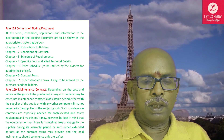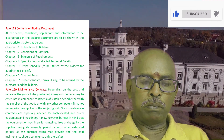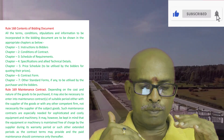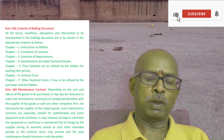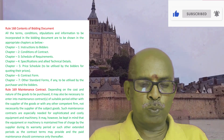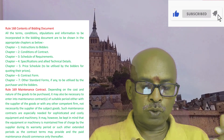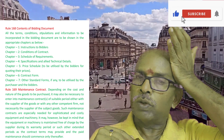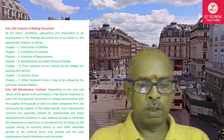Now we have come to the preparation of the bidding document — what should be the contents. The government has prescribed seven major chapters broadly. You can add more also, but broadly these should be available. All terms, conditions, stipulations and information to be incorporated in the bidding document are to be shown in the appropriate chapters.